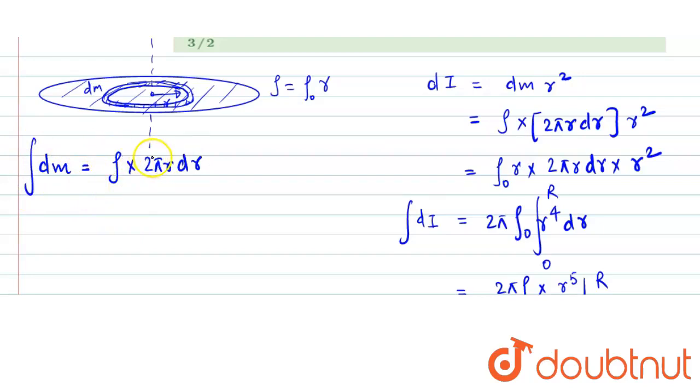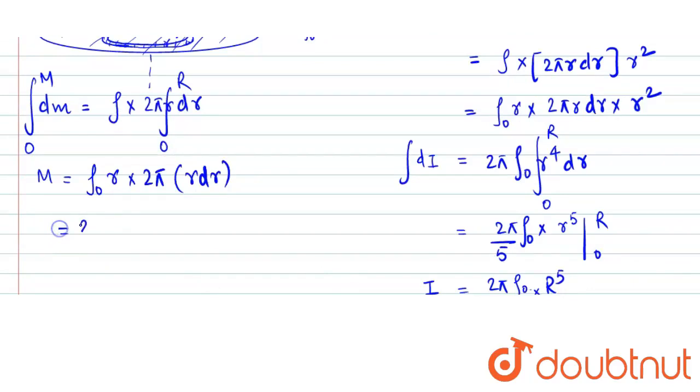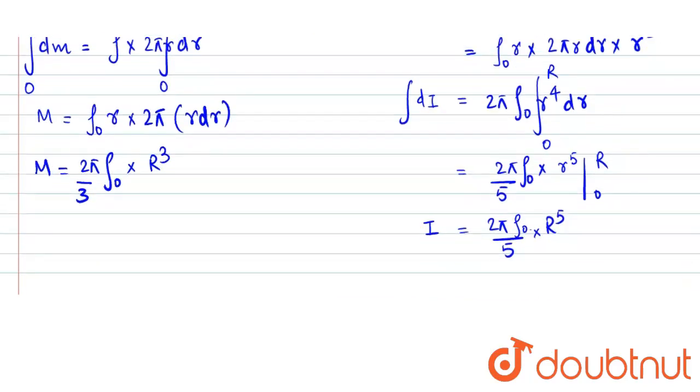For integrating it we can integrate from 0 to capital R. Total mass would be 2 pi, and we also have to put the value of rho, that is rho naught into r, into 2 pi into r dr. So that becomes 2 pi rho naught into r square dr. Integration is r cubed by 3. After putting the limits, instead of 2 pi rho naught into r cube we can write it as 3m.